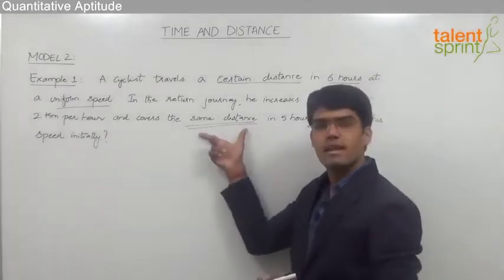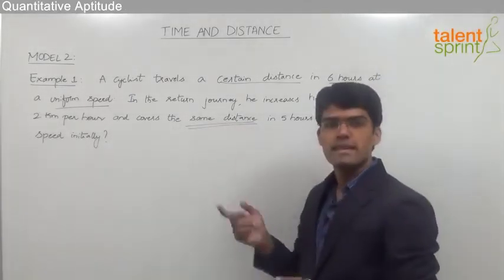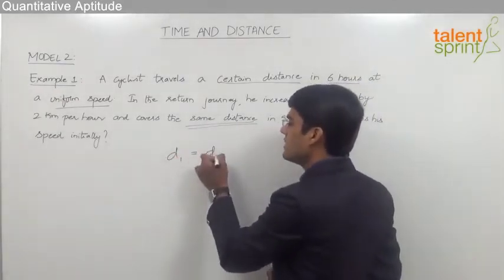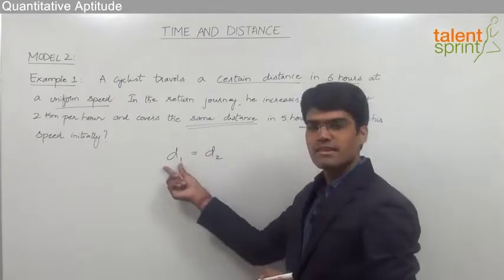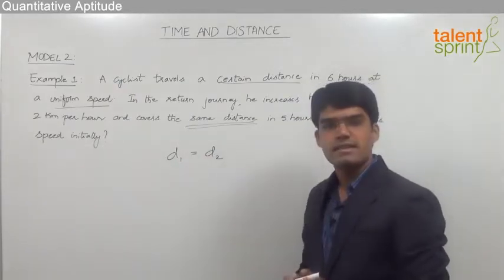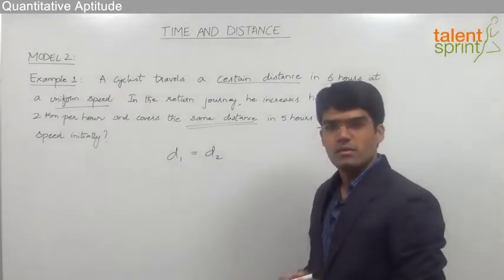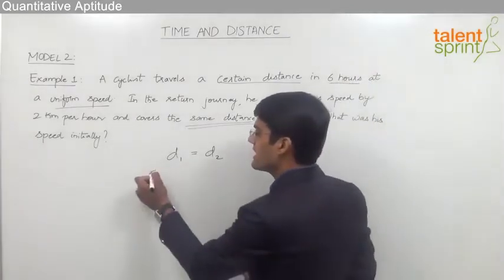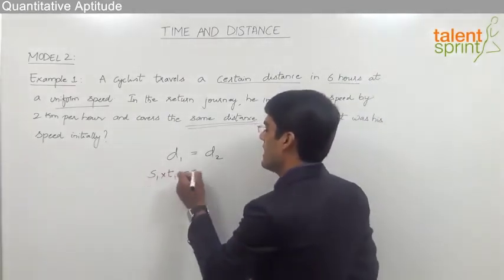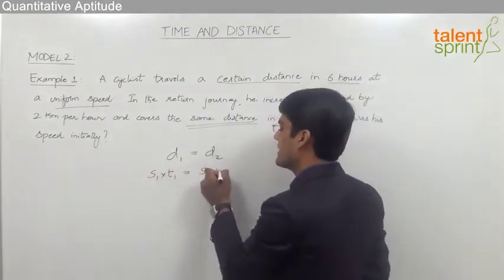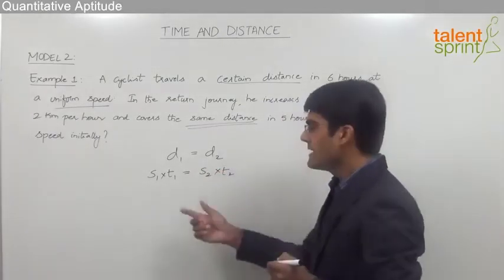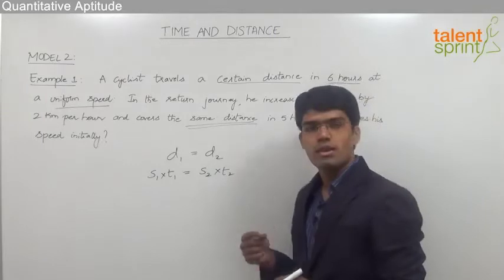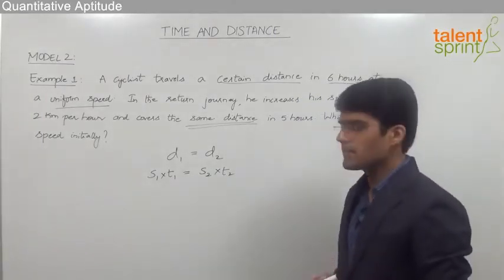As given, the distance covered in the two cases is equal, so d1 equals d2. Distance is nothing but speed multiplied by time. So d1 can be taken as s1 into t1, and d2 can be taken as s2 into t2, where s1 and t1 are the speed and time initially, and s2 and t2 are the speed and time in the return journey.